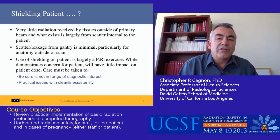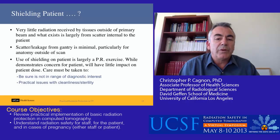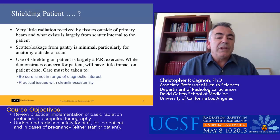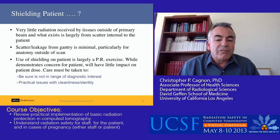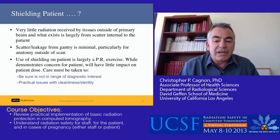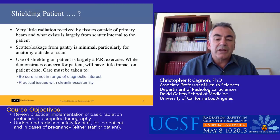What does this mean for shielding the patient? Very little radiation is received by tissues outside the primary beam, and what exists is largely scatter internal to the patient. Scatter and leakage from the gantry is minimal, particularly for anatomy outside the actual scan length. This means the use of shielding on a patient is largely a public relations exercise — while it demonstrates concern for the patient, it will have almost no impact on actual patient dose. If you do use shielding, ensure it is not in the range of diagnostic interest, as it will cause tremendous artifacts, and there are practical concerns regarding cleanliness and sterility.